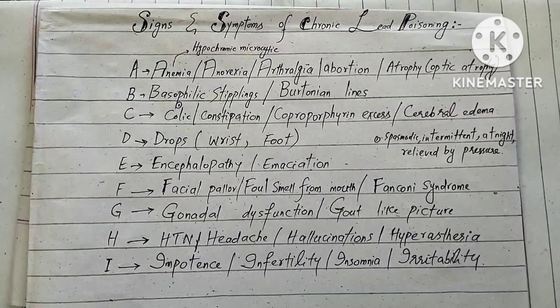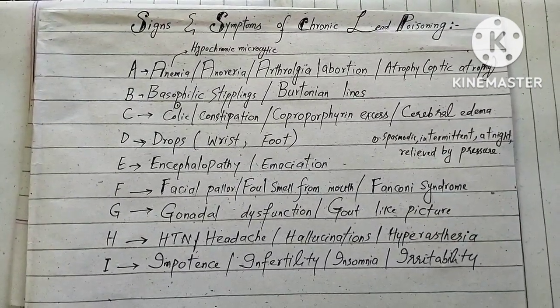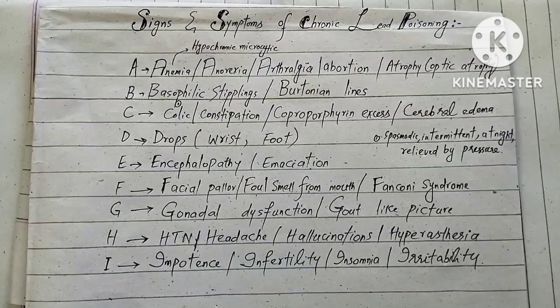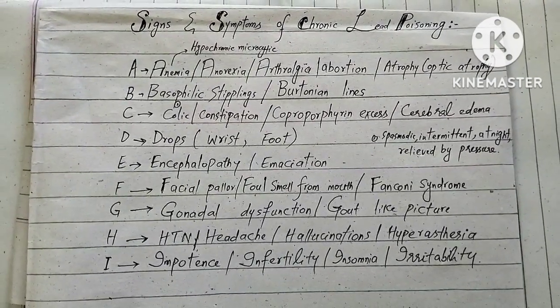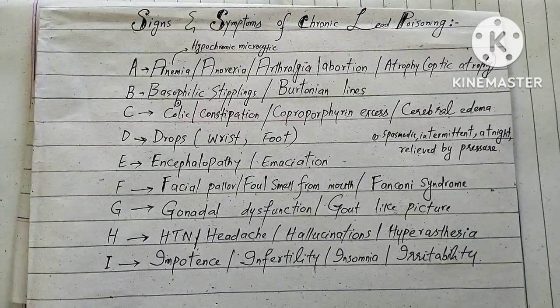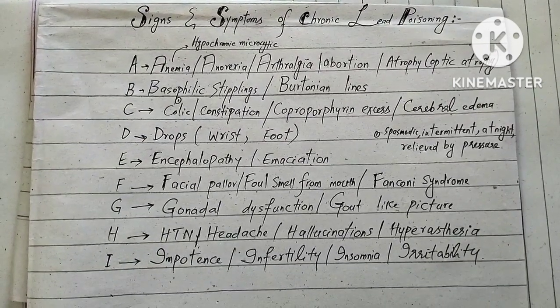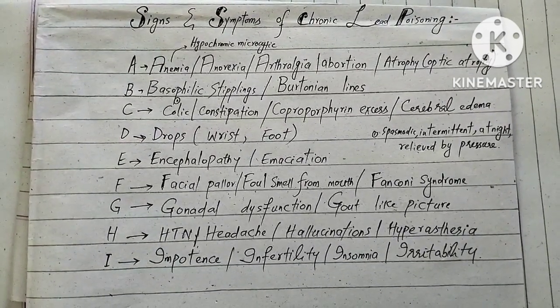I stands for impotence, infertility, insomnia, and irritability. This short video will help you to memorize easily the signs and symptoms of chronic lead poisoning.